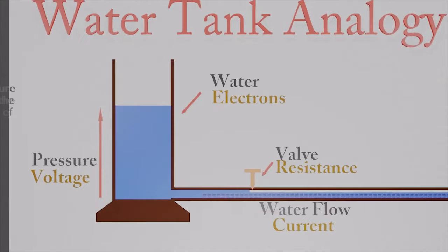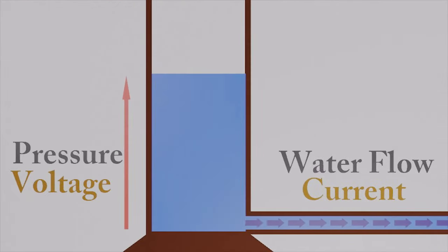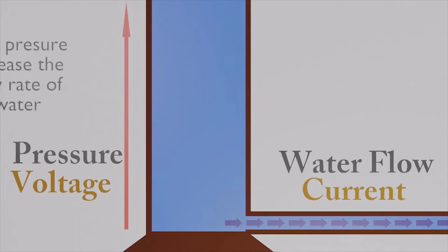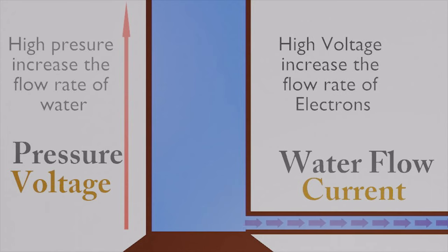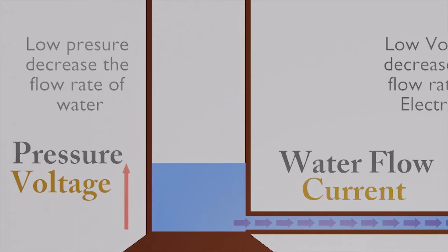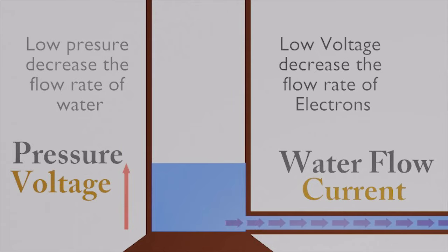Now let's pay attention to the pressure — I am using the word voltage for pressure. Forget about the valve or resistance for now. If we increase the voltage, it causes an increase in the speed of water flow; the amount of water flowing per second is higher than before. That means increasing voltage also increases the current. If we decrease the water pressure, it decreases the speed of water flow. The amount of water flowing per second is lower than before — decreasing voltage also decreases the current.